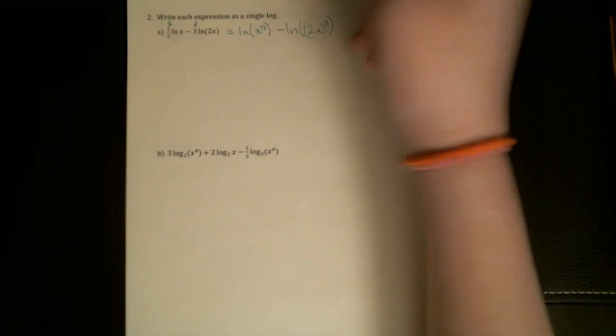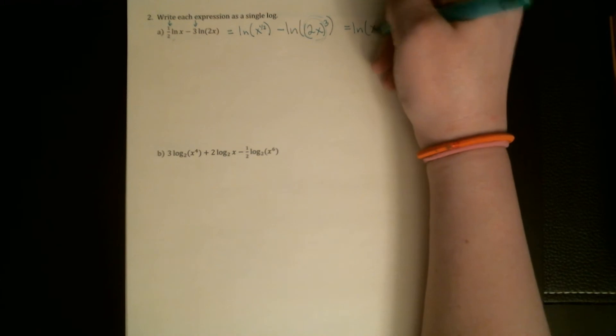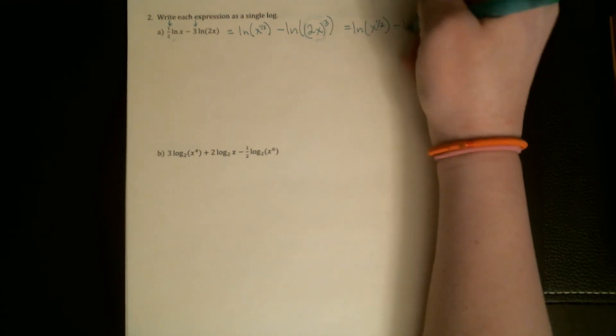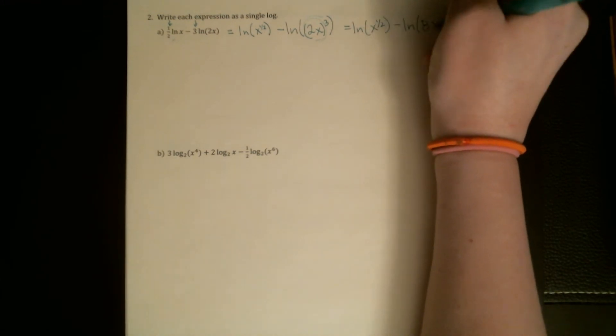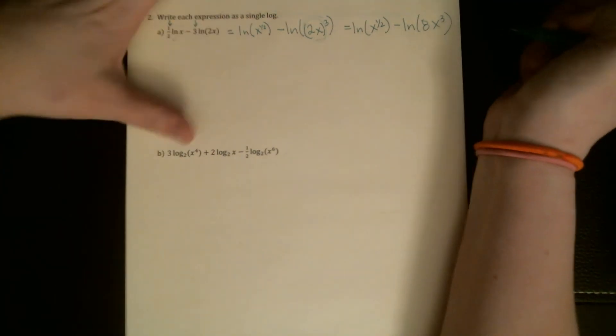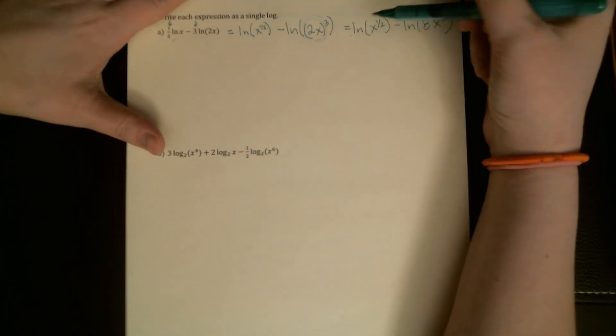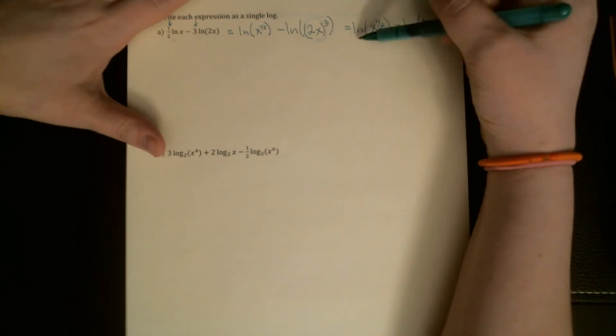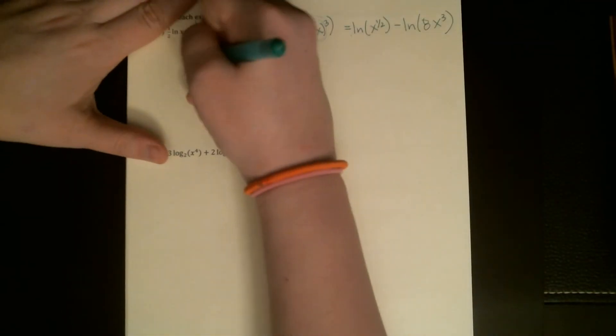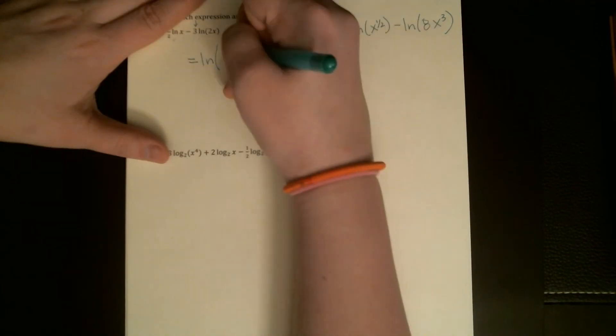I'm going to go ahead and do a little bit of simplification: ln of x to the one-half minus ln of 8x cubed. Now I can deal with the subtraction now that there aren't any coefficients. If you're finding the difference between two logs, you can combine that into a single log of a quotient.